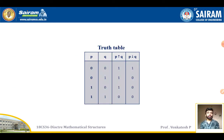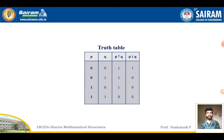Now let me construct the truth table for both NAND and NOR. The truth table must have the truth values for P and Q. The truth values for P are 0, 0, 1, 1 and for Q are 0, 1, 0, 1.